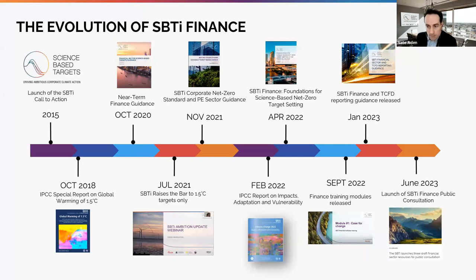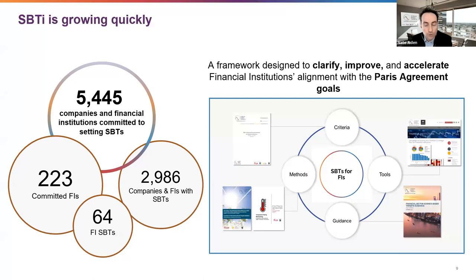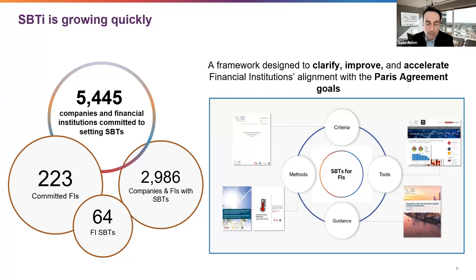We've been growing very quickly, more than doubling each year for the past few years. We now have 5,500 companies and financial institutions with public commitments to set science-based targets, of which about 3,000 have gone through the process and met our criteria. The financial institutions component is smaller due to a lag in methods and criteria, but we have more than 220 that have committed publicly and 64 that have targets validated through our process.